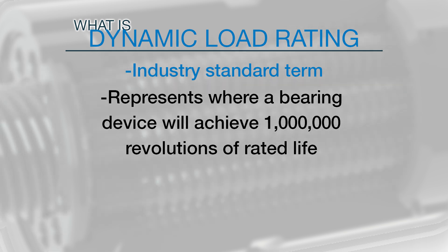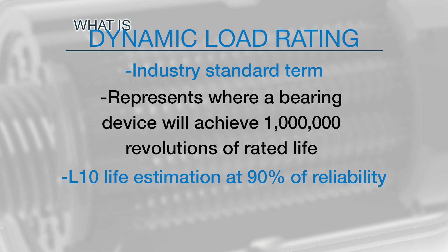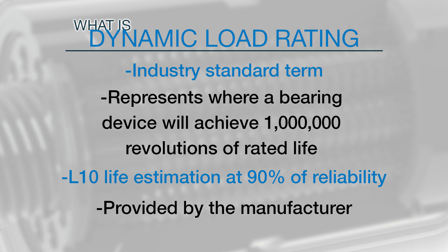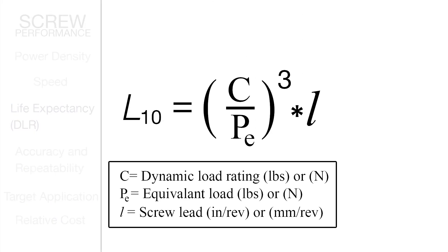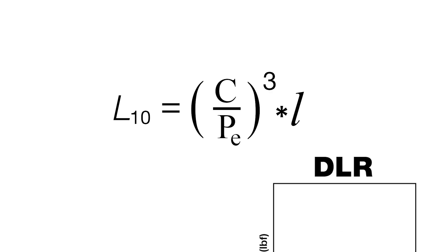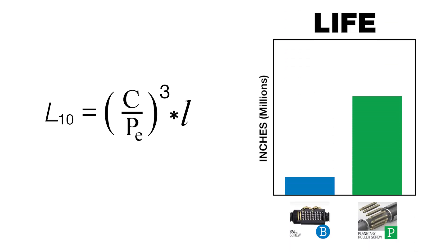Expected life is often communicated as the L10 life estimation. This is the point where 10% of the component population would begin to show initial signs of wear. The L10 calculation uses a cubic relationship of the ratio of dynamic load rating to equivalent load. This cubic relationship means that a roller screw with a modest DLR advantage over a ball screw will have a significantly higher L10 rating on its life.